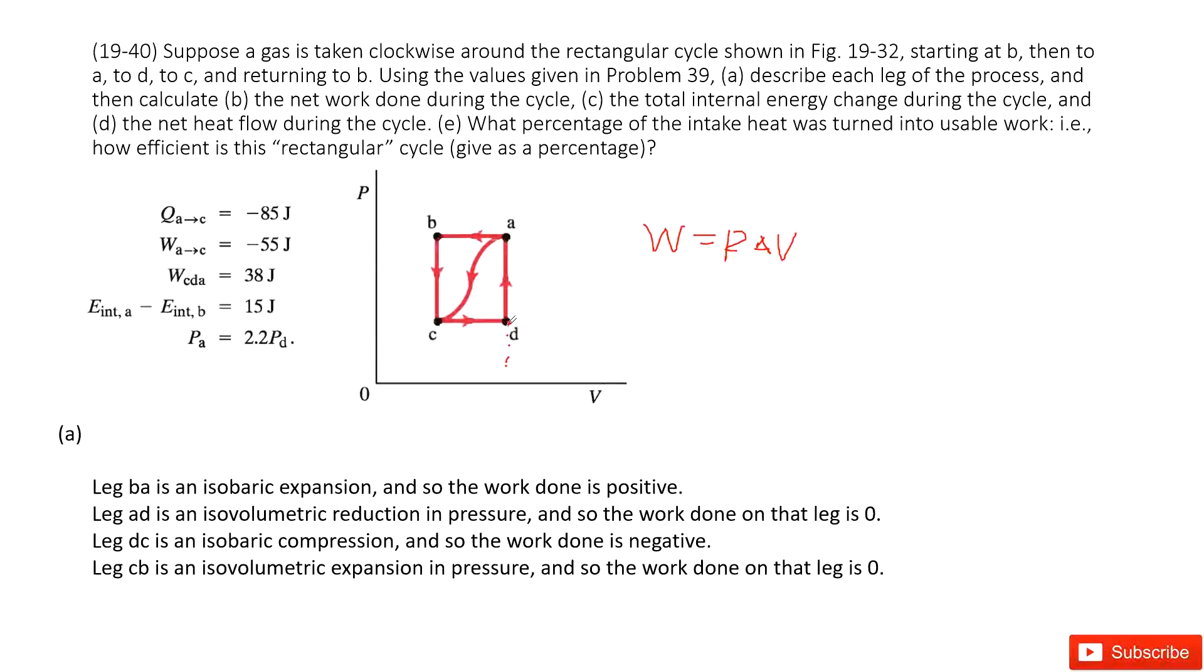And then from D to C, in this case pressure is constant but the volume decreases. Delta V is negative, so that makes isobaric compression. And the work is negative because delta V becomes negative.